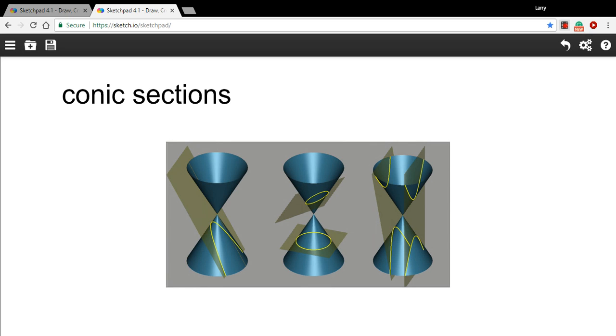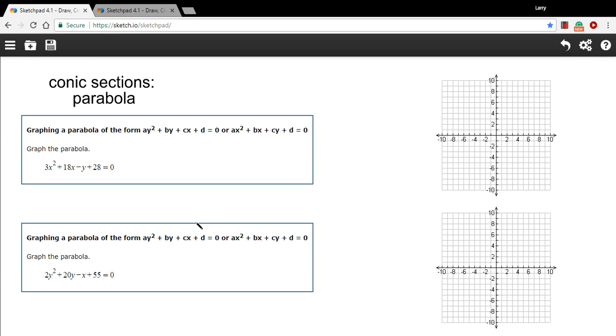If you slice the cone so that it hits both cones along the side, you're going to get a hyperbola. Today we're going to talk about parabolas, and this happens when you slice through one of the cones diagonally. In these problems, we are being asked to graph parabolas, both upward and downward opening, and left and right opening parabolas.